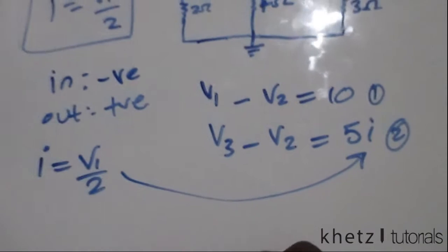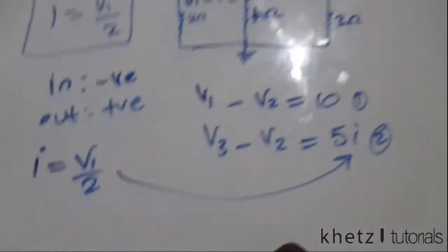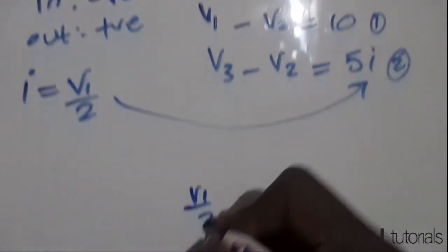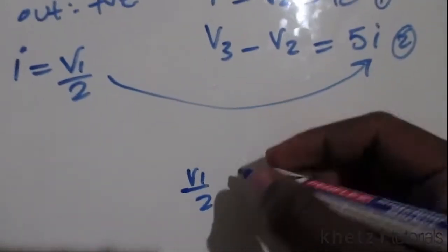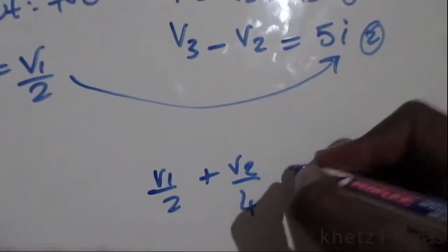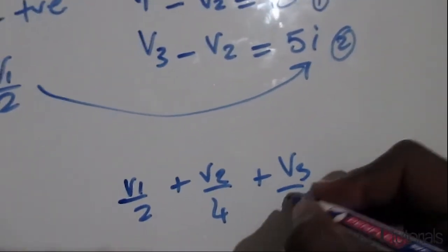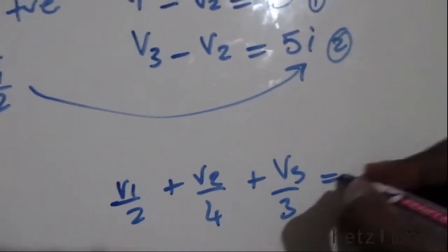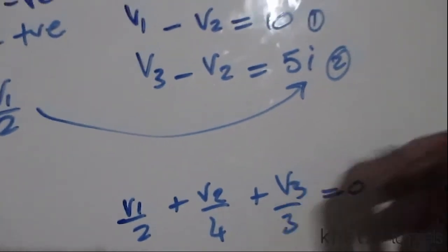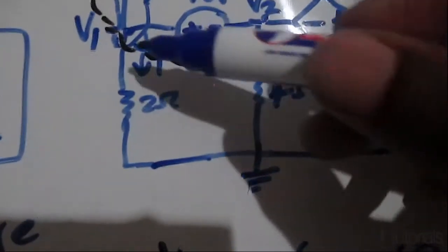Our final equation is the KCL equation for the super node itself. We have V1 divided by 2, plus V2 divided by 4, plus V3 divided by 3, equals zero. These three terms come from the three currents exiting the super node.